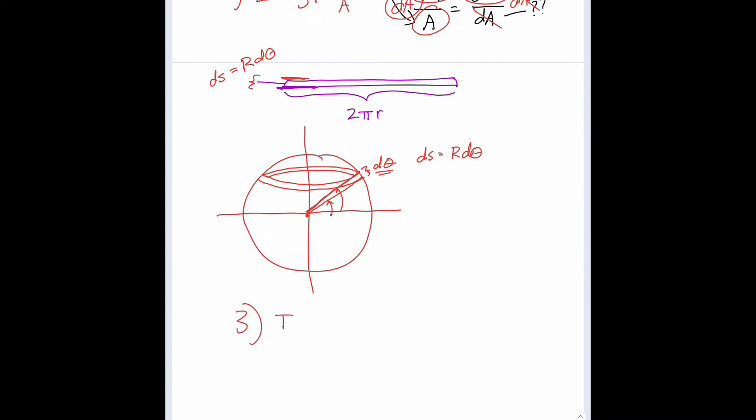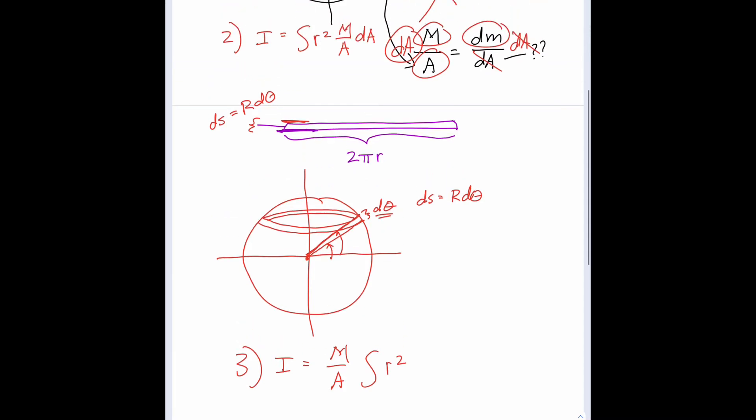So step three: I equals, take the M over A out of the integral, and we're left with the integral of r² dA. So what is dA? Well, dA would just be length times width, a length of 2πr and a width of rdθ. So instead of writing dA, I'm going to substitute for it 2πr times capital Rdθ.